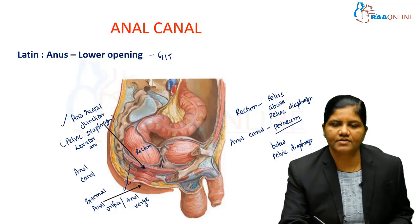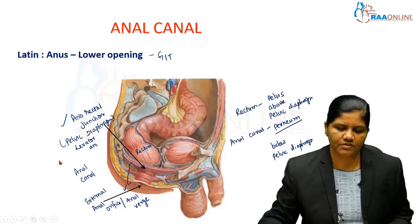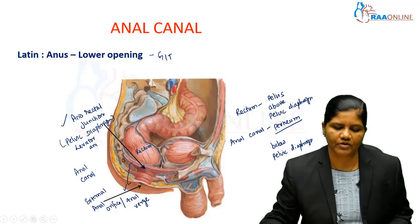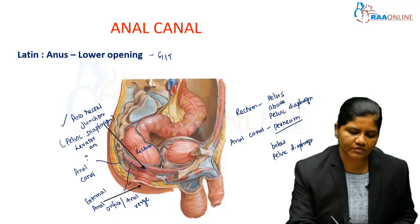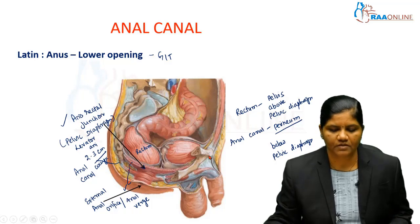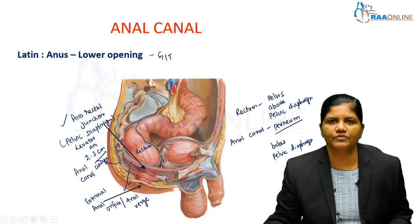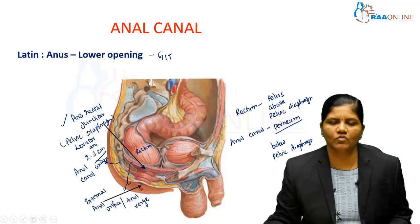Posteriorly, the anal canal is related to the tip of the coccyx. The anal canal is located around 2 to 3 cm from the tip of the coccyx, and the lower opening is around 4 cm from the front of the tip of the coccyx. In summary: it is the lowermost opening of the gut, present in front of the tip of the coccyx, and is the continuation of the rectum at the anorectal junction, opening externally as the anal orifice or anal verge.